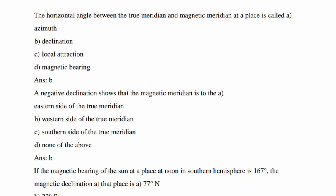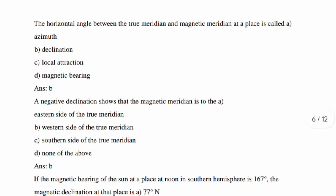Next question, a negative declination shows that the magnetic meridian is what? It is on the western side of the true meridian.